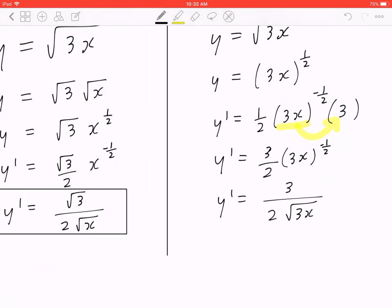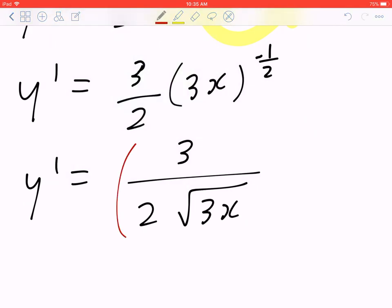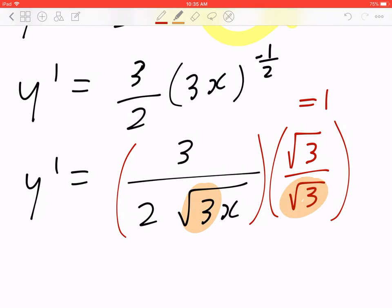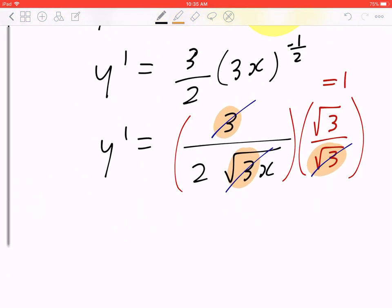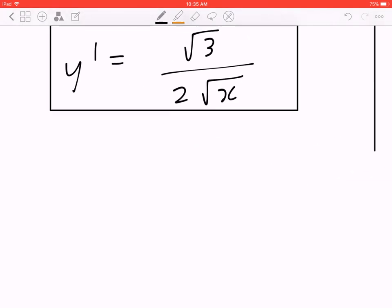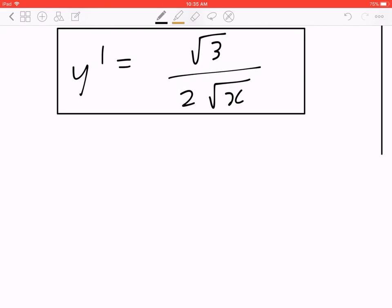Now when you compare them side by side, they don't look the same, but they're actually the same y prime because if you multiply the top and the bottom by root 3 over root 3, which effectively you're multiplying by 1, look what happens. Root 3 times root 3 is going to be 3, and 3 divided by 3 will give you 1. So now, y prime equals root 3 times x to the power of negative half.